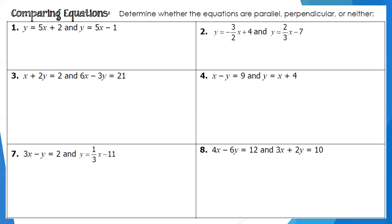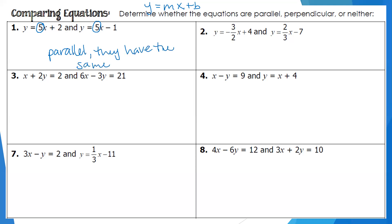In number one, I have y equals 5x plus 2, and y equals 5x minus 1. Both equations are already in y equals mx plus b form. The slope of the first equation is 5, and the slope of the second equation is also 5. The slopes are the same, so these two lines are parallel. Remember: the slope is just the coefficient in front of x — so the slope is 5, not 5x.